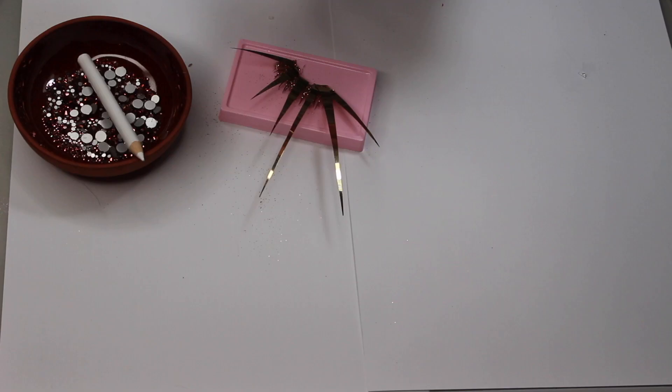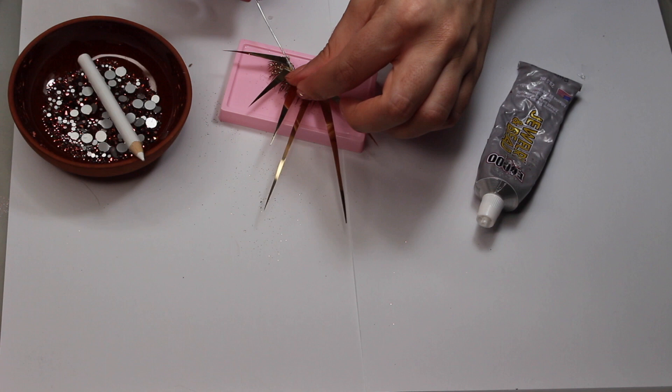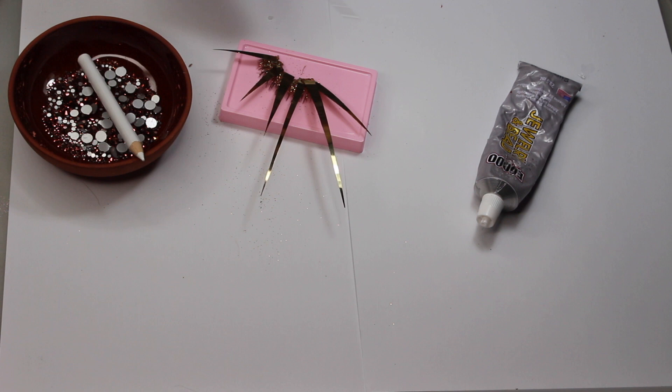The last step is to just clean up the band with some rhinestones. Get some glue on your pin and you just want to dab that onto the band of the lashes.